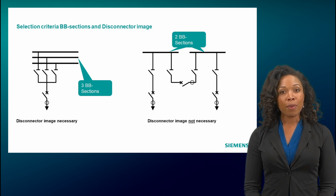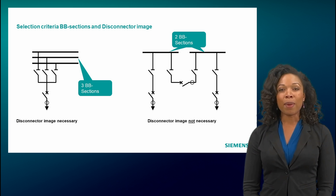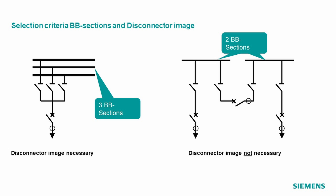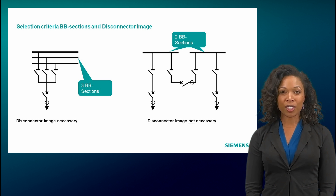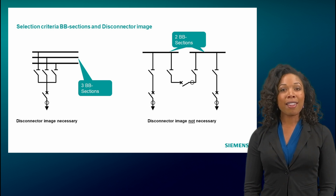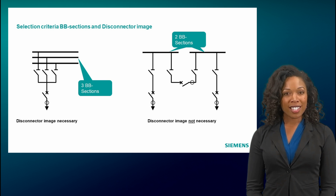When defining the basic properties, it is necessary to specify the number of maximum busbar sections. Furthermore, it must be determined whether the disconnector replica is required. The picture on the left shows a triple busbar. Since the current flows to the first, second, or third busbar section depending on the disconnector position, the protection system needs the disconnector image to know which busbar or node the measured value must be attributed to. In the figure on the right, the recorded current value can only be attributed to one busbar section at a time, so the disconnector replica is not required. Since the two busbar sections are connected via a measured longitudinal coupling, each busbar half can be calculated separately, and two busbar sections are required.